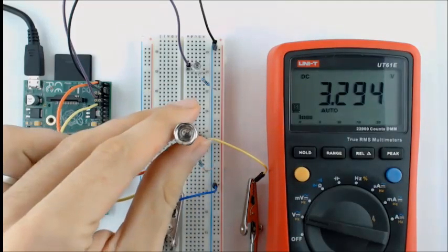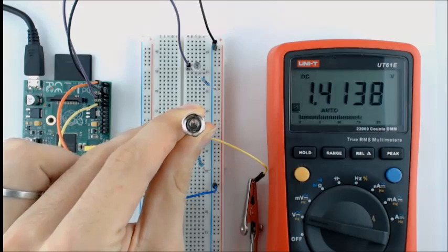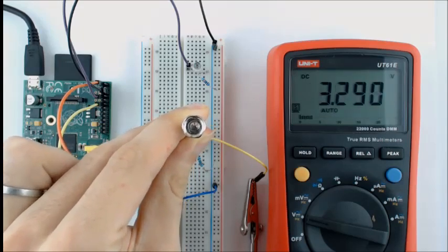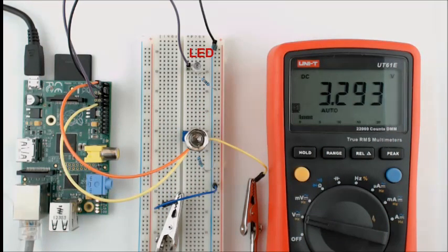By changing the resistance of the variable resistor, I can change the voltage level that's being given to the input pin. So we're starting off at 3.3 volts. I've also included an LED at the top of the breadboard controlled by a GPIO output pin. I'll use this to indicate when the input pin has reached a high or low value.